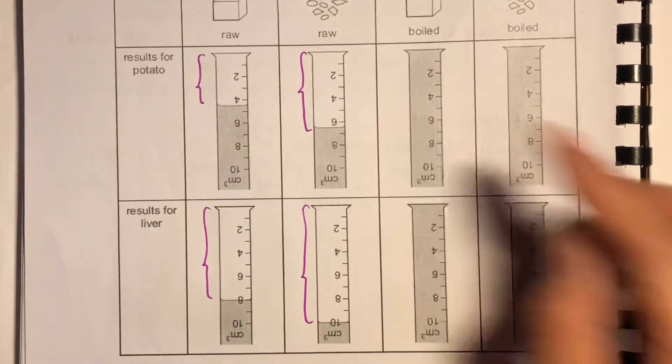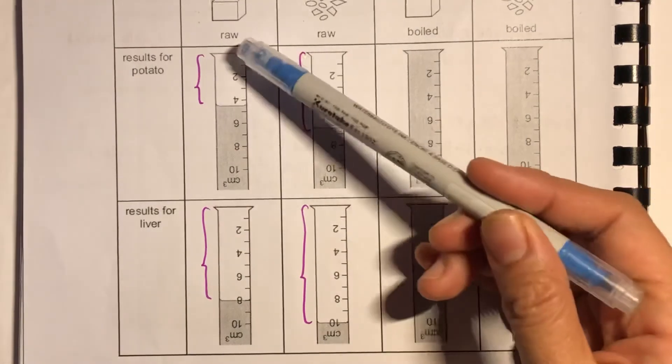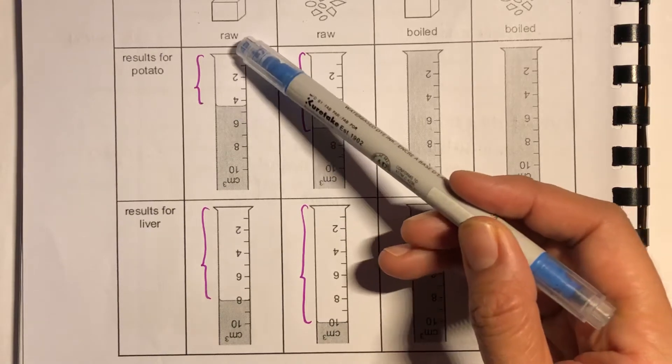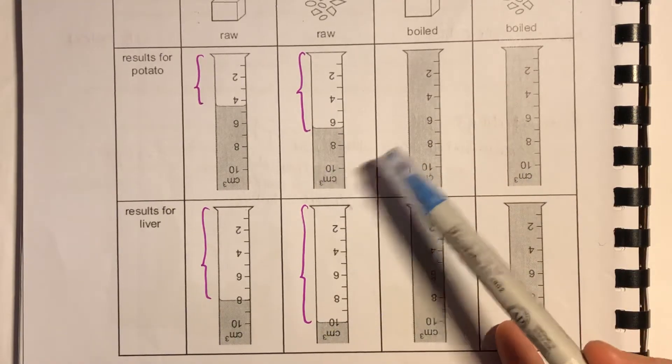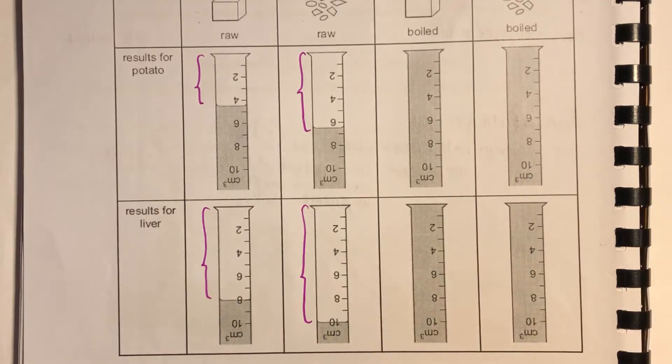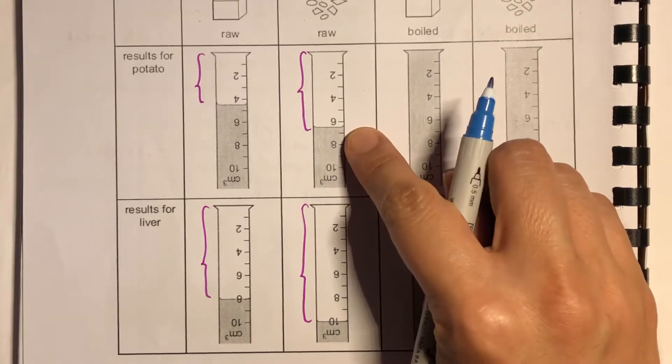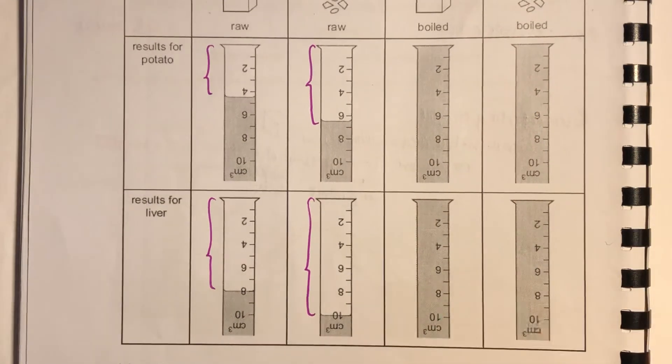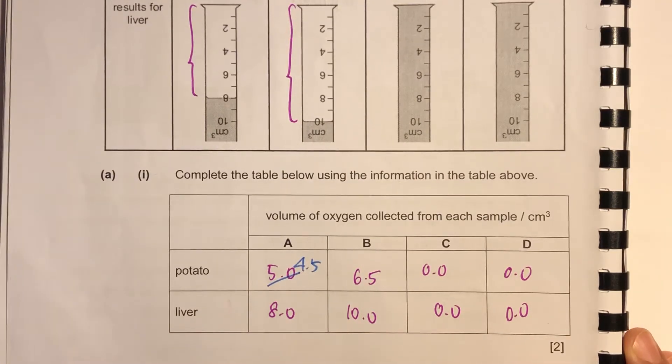Now the oxygen, volume of oxygen is taken from the difference between here and here. This being zero, this is five, four and a half rather. This one is, sorry, this is four and a half. This one is six and a half. This of course is zero, zero. So these are the answers.